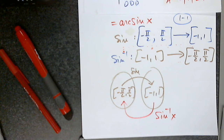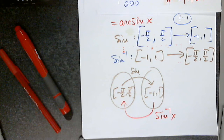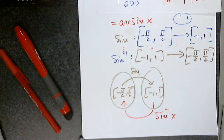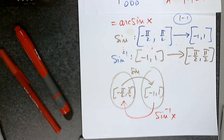Now sign inverse is applied to a number between negative 1 and 1, and it will give us an output of an angle. So I need you to understand this one more time. Sign is applied to angles, returns a number between negative 1 and 1. Sign inverse is applied to numbers between negative 1 and 1, and it will return — what is the output of sign inverse?